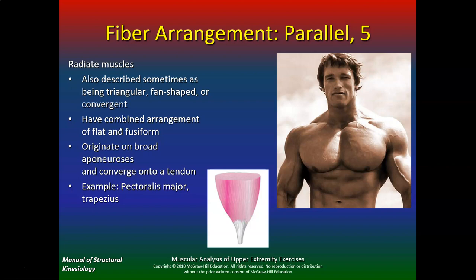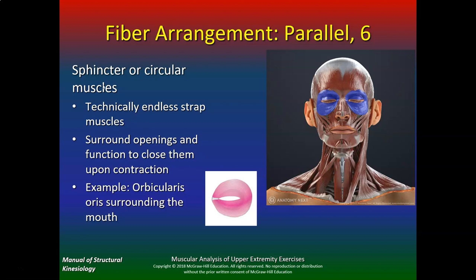From a quiz standpoint, I want to know the fiber arrangement, why it's called what it is, and an example. The sphincter or circular muscles are technically endless strap muscles — they surround openings and function to close them. Examples: orbicularis oris surrounding the mouth, and orbicularis oculi surrounding the eye.